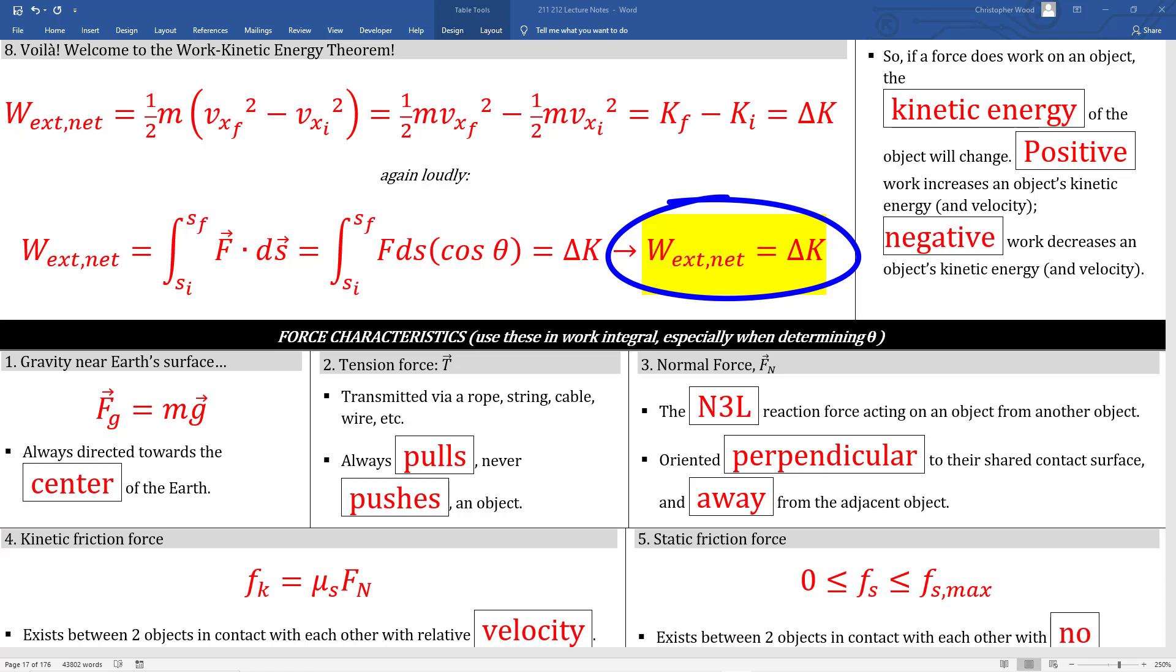So if a force does work on an object, the kinetic energy of that object changes. Positive work increases that object's kinetic energy and because we know kinetic energy is one-half mv squared, positive work increases that object's velocity. Negative work decreases the object's kinetic energy and for the same reason, negative work decreases the object's velocity.